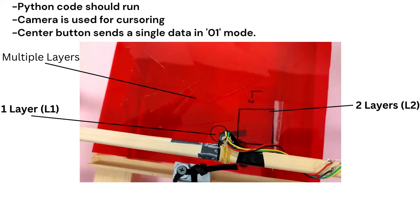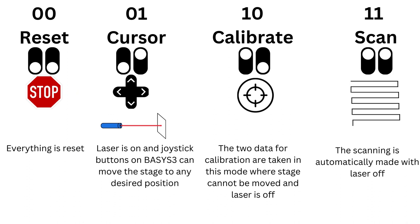In 1-0 calibration mode, we need two data points from our sample. First, we have to receive data from the sample where we know the thickness of our thin film is only one layer, then send this data to our Python code via UART protocol. Secondly, we switch back to cursor mode and find a zone where the thickness is two layers, so that our code can determine how much light intensity changes when we add an additional layer of thin film.